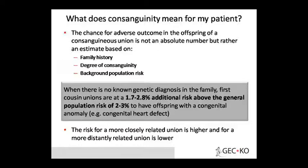If a family carries a disease-causing allele, every individual in that family may be a carrier of that DNA. When second-degree or third-degree cousins marry, they can both pass on the allele, resulting in a homozygous condition, and that disorder will be expressed in the next generation offspring. The chances of adverse outcomes increase, which we assess based on family history, degree of relation, and background population risk.